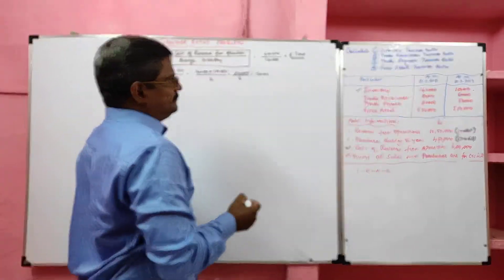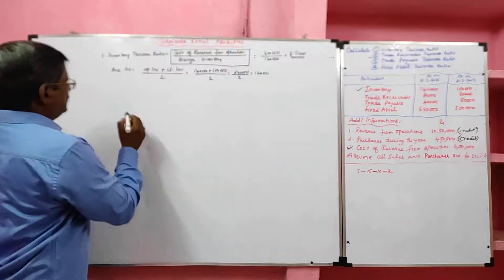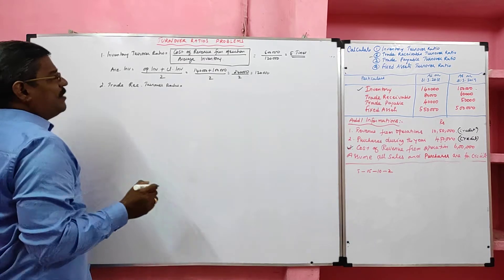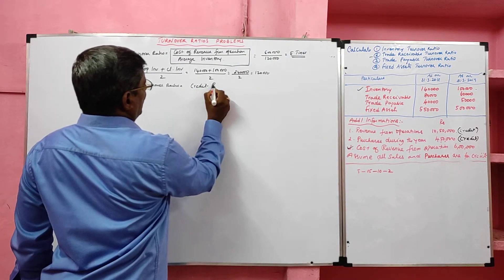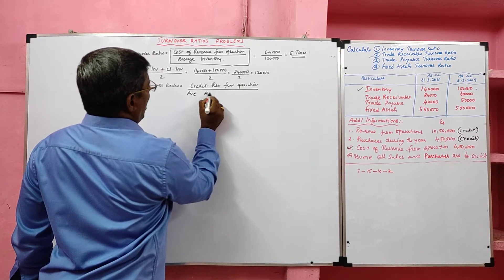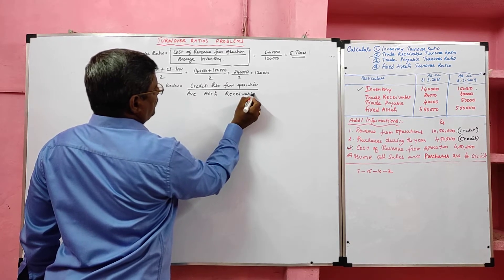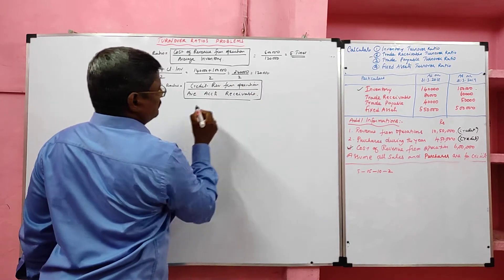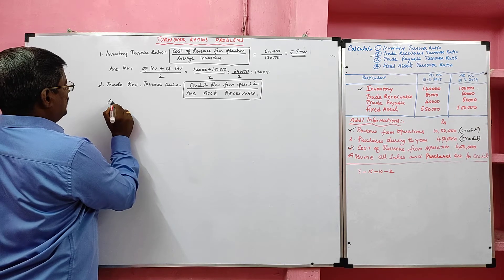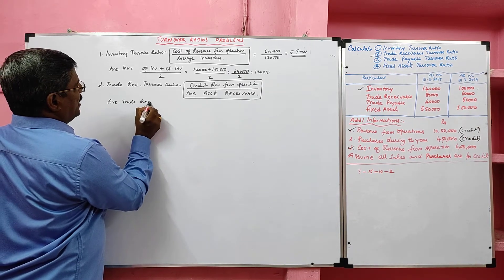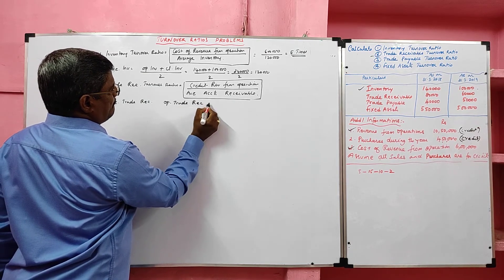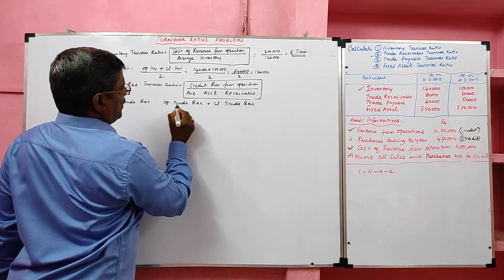Second ratio: trade receivable turnover ratio. Formula — credit revenue from operation divided by average accounts receivable. In this problem, credit revenue from operation is given. We need to find average trade receivable. Formula: opening trade receivable plus closing trade receivable divided by two.